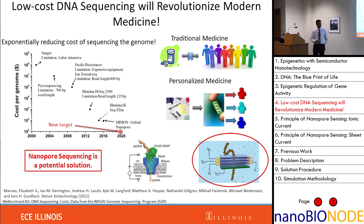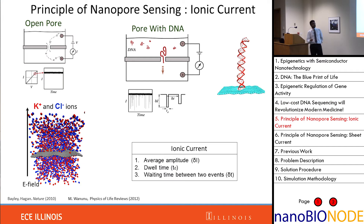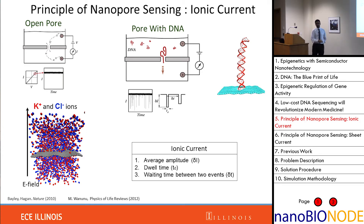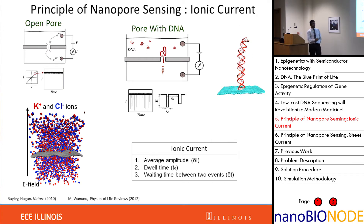There are two kinds of nanopore sequencing methods: biological and solid state. I'm going to talk about solid-state nanopore sequencing. In nanopore sequencing, I take a box of water filled with ions, separate it into two chambers with a pore in between, and apply an electrical bias across the two chambers. Basic physics tells us that positive ions move in the negative direction and chlorine ions move toward the positive terminal.